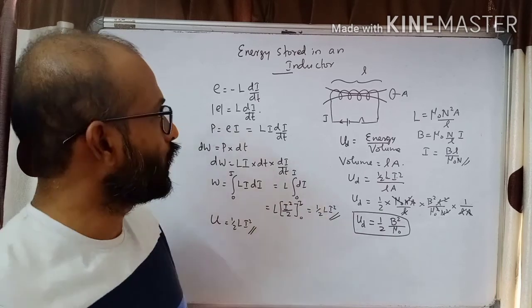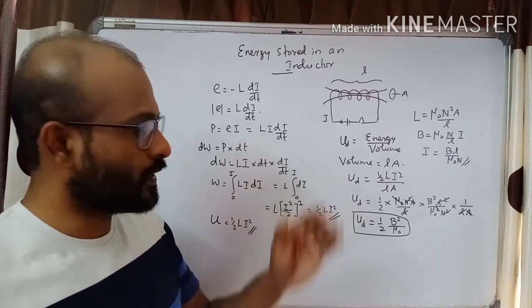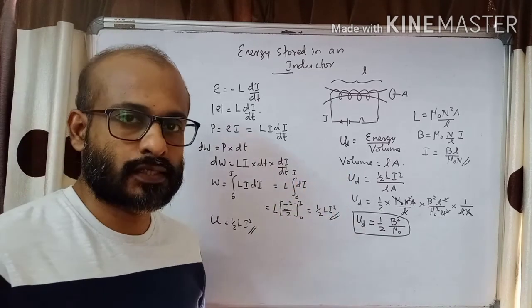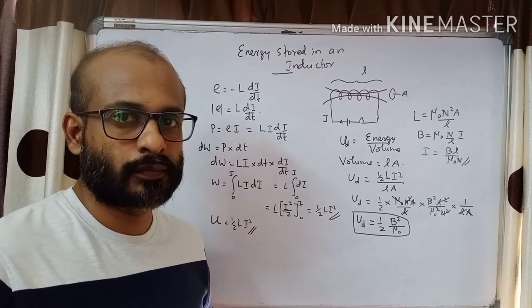So we have derived both expressions: the energy stored in an inductor, U equals half L I squared, and the energy density, U_d equals half B squared by μ₀. Thank you.